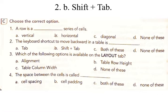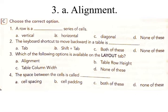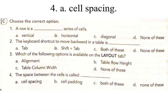3. Which of the following options is available on the Layout tab? a) Alignment, b) Table row height, c) Table column width, d) none of these. Answer: a) Alignment. 4. The space between the cells is called: a) cell spacing, b) cell padding, c) both, d) none. Answer: a) Cell spacing.